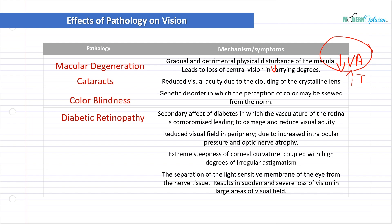Diabetic retinopathy is a secondary effect of diabetes in which the vasculature of the retina is compromised, leading to damage and reduced visual acuity. Diabetic patients need to be checked so this doesn't become an issue. If people are starting to complain that they don't see like they used to, you have to start questioning the retina — things like macular degeneration, cataracts, and also diabetic retinopathy. If your patient is diabetic, this does play a factor.